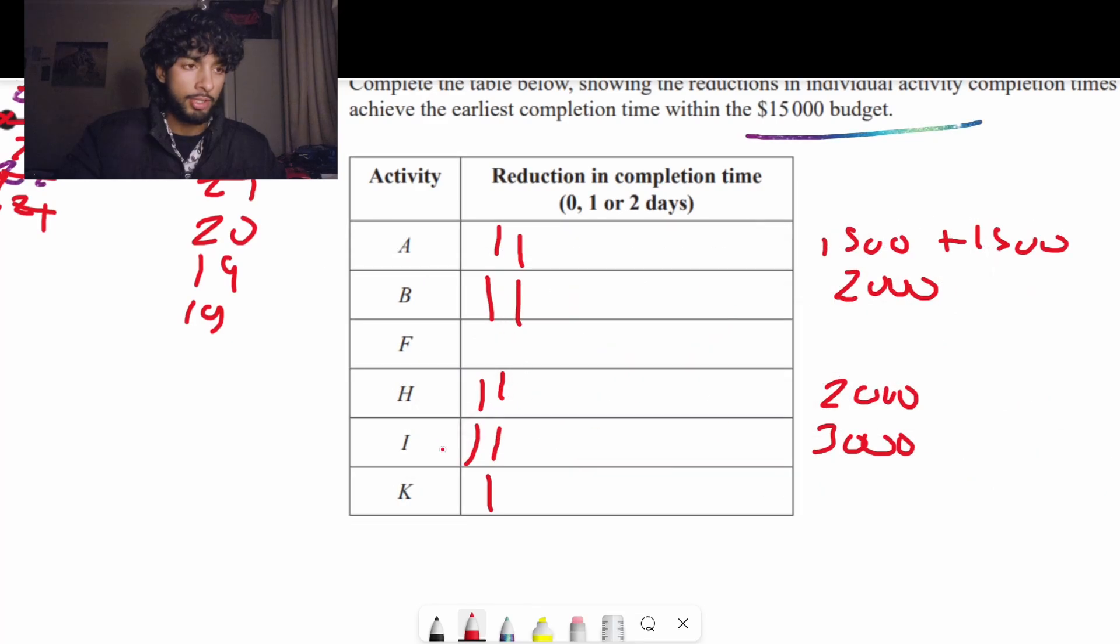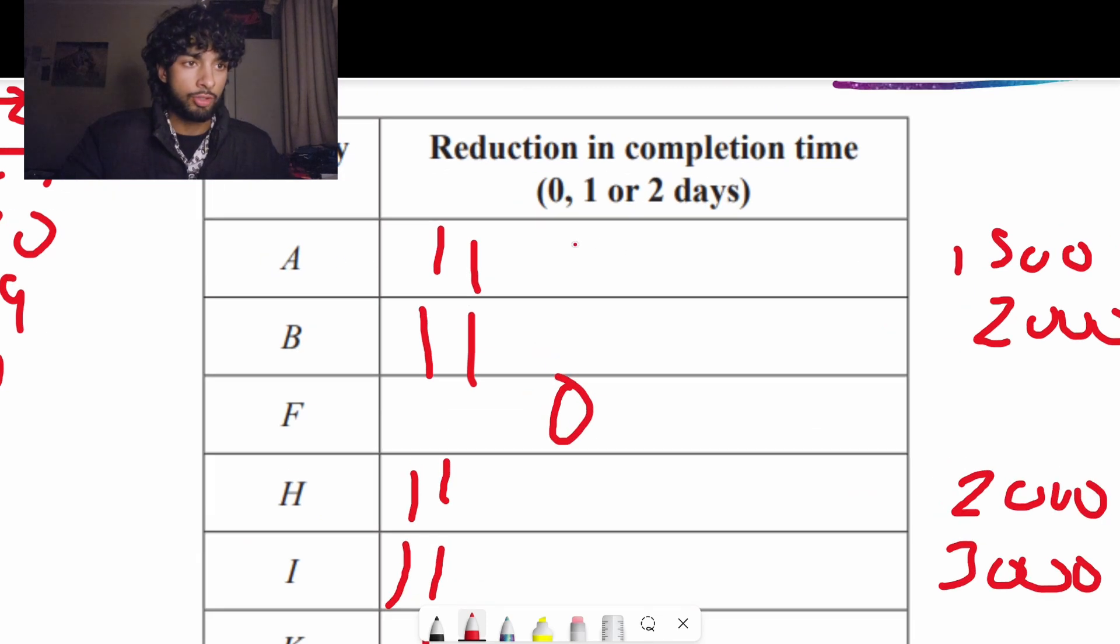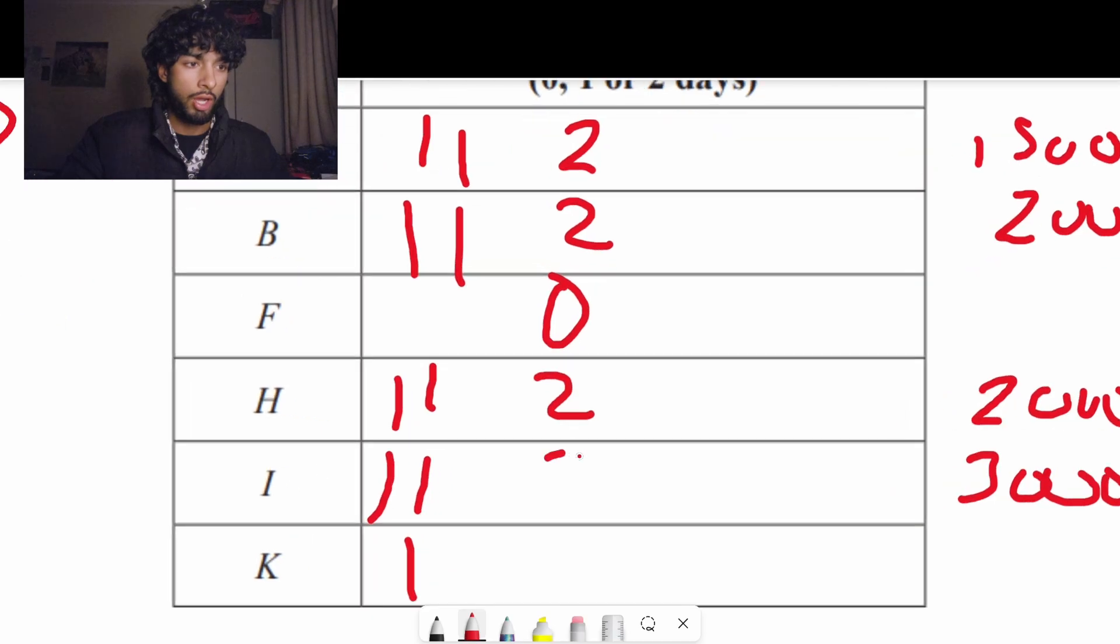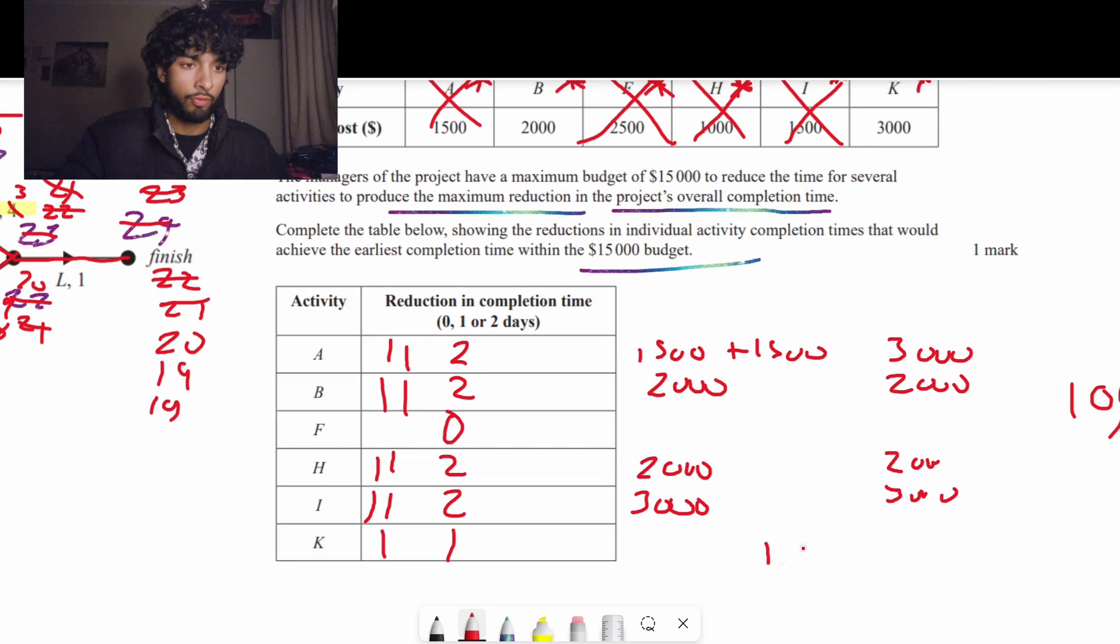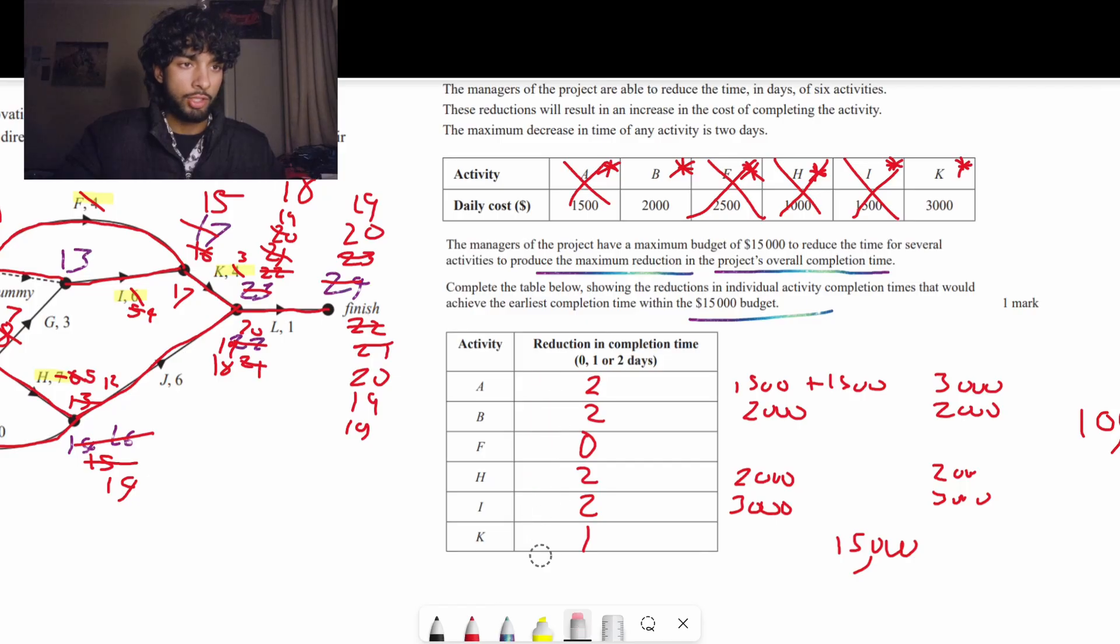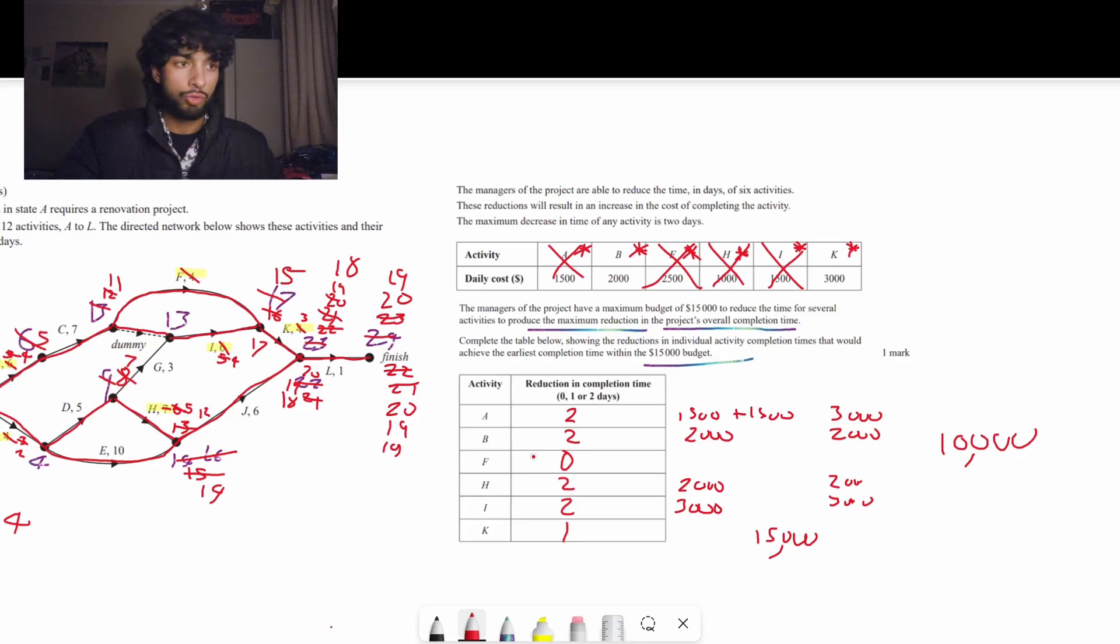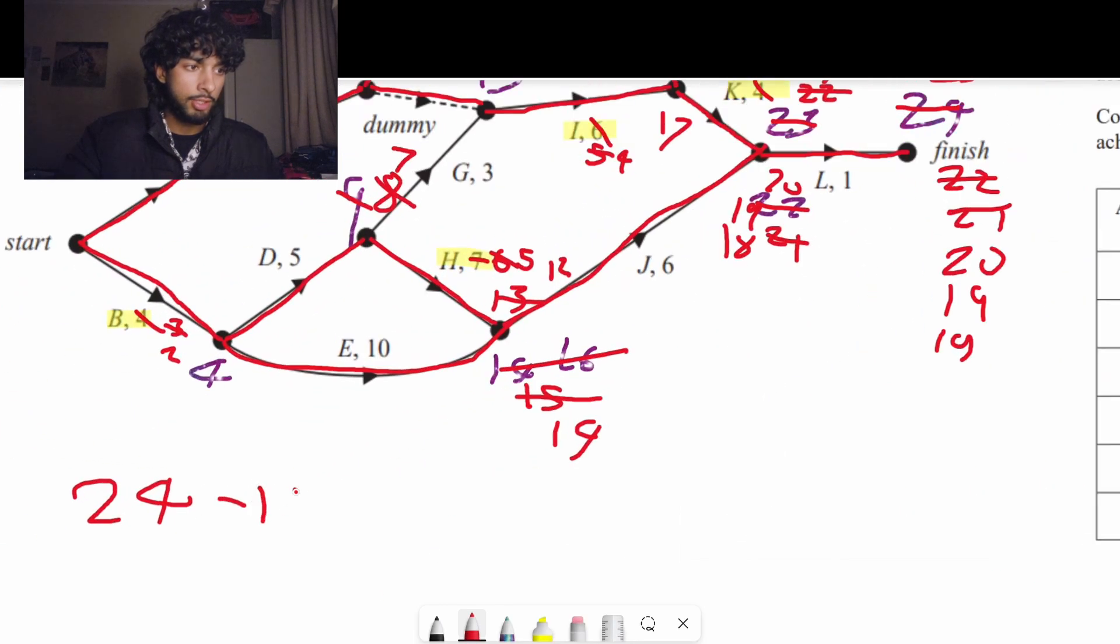So this now becomes a 2 and this now becomes a 3. That means that this 15 becomes an 18, then this 18 becomes a 19. So the overall completion time looks to be 19. We'll double check. 2 plus 5 is 7. 7 plus 5 is 12. And 12 plus 6 is 18. 18 plus 1 is 19. And we went from 24 to 19, which is an overall reduction of 5 days.